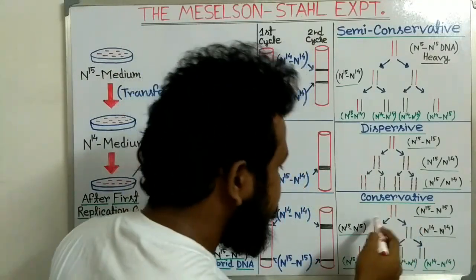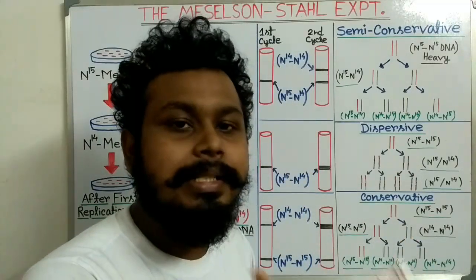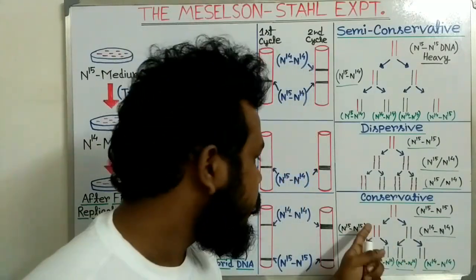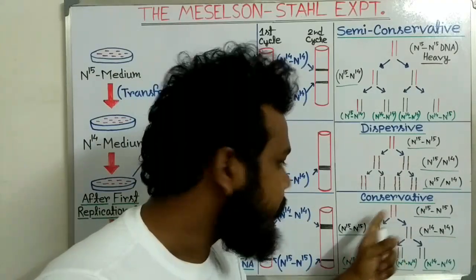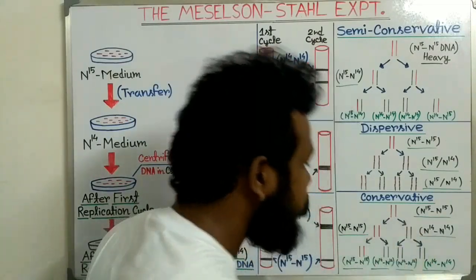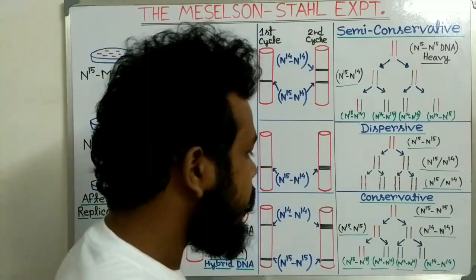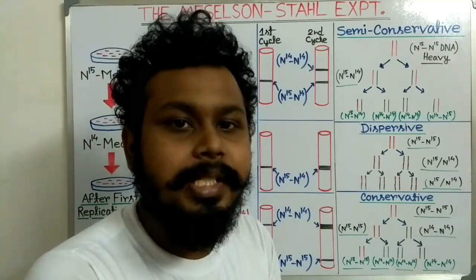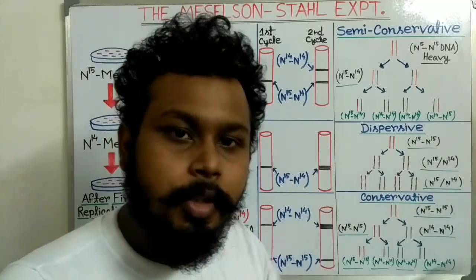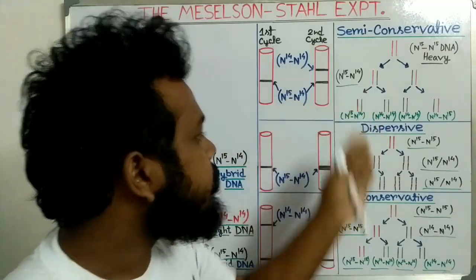In the conservative model, the parental DNA molecule is conserved, and a whole new DNA molecule is generated. One new DNA molecule gets both the parental DNA strands, and another new DNA molecule gets both entirely new DNA strands. So no combination or mixture is present between the parental DNA and the new DNA.